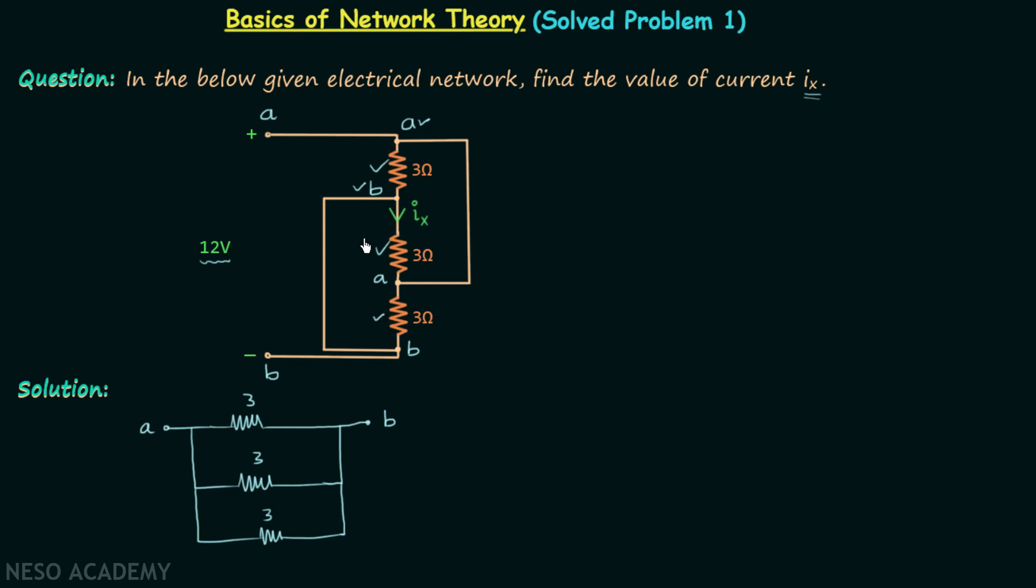When you look at current Ix, you will find it is from A to B terminal. Therefore from A to B terminal we will have our current Ix, but this is not correct. When you focus on the resistor through which Ix is flowing, you will find it is leaving the node B